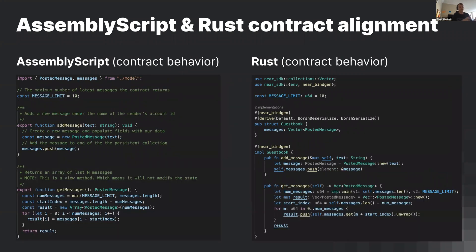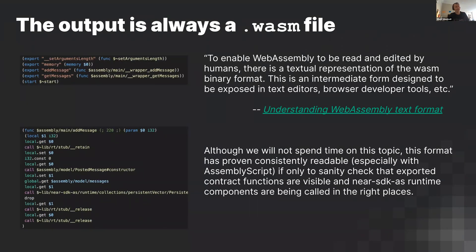Here's what contract data looks like side by side. In AssemblyScript a posted message is a class; in Rust it's a struct. For contract behavior, AssemblyScript uses 'export function add_message' and 'export function get_messages', while Rust uses public functions plus a struct due to the type system. No matter what language you use, the output is always a Wasm file. You can actually read the WebAssembly text format and recognize the methods like 'add_message' and 'get_messages' directly.